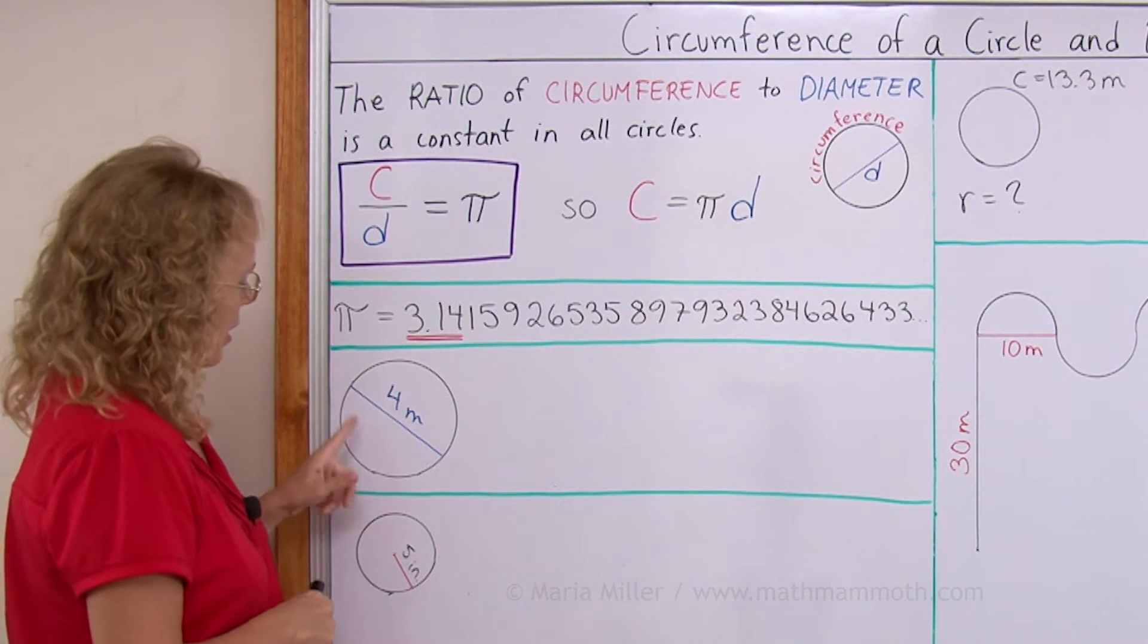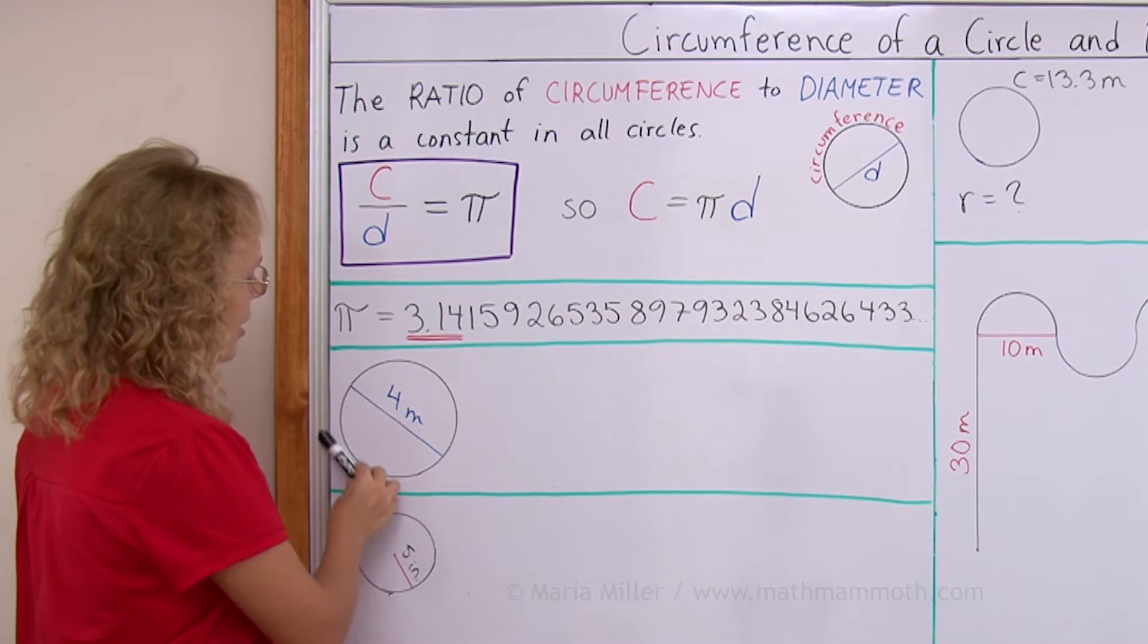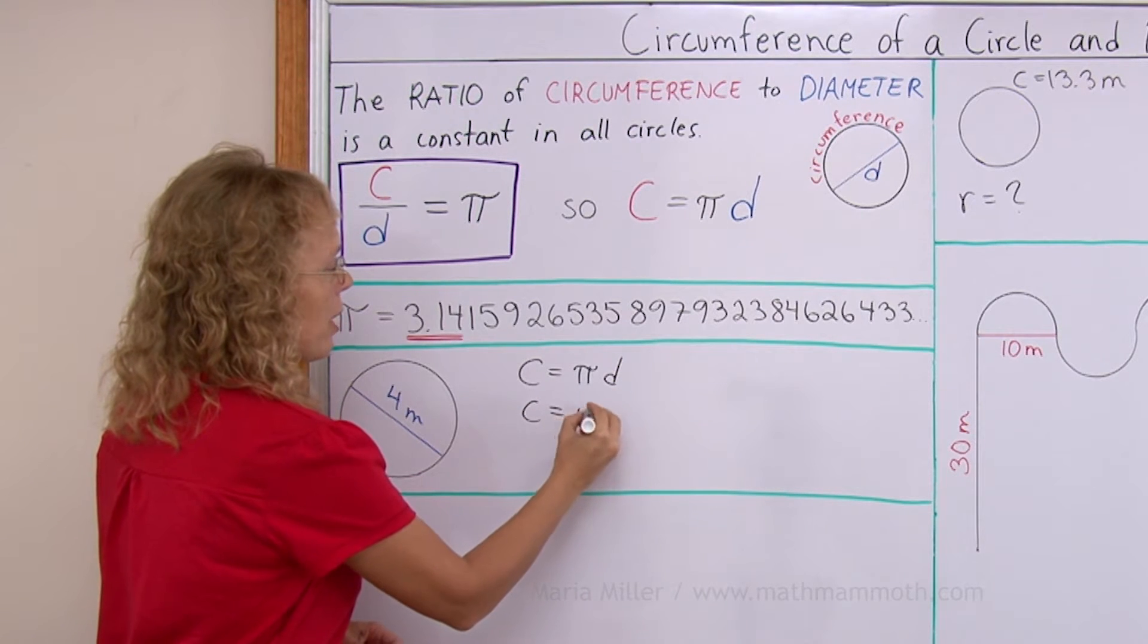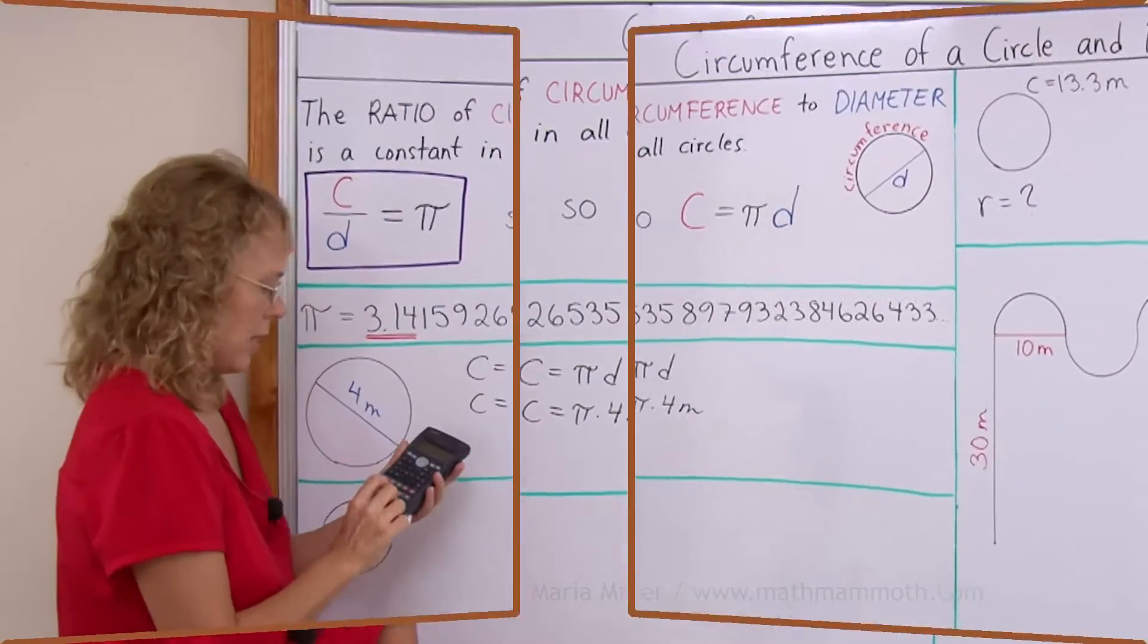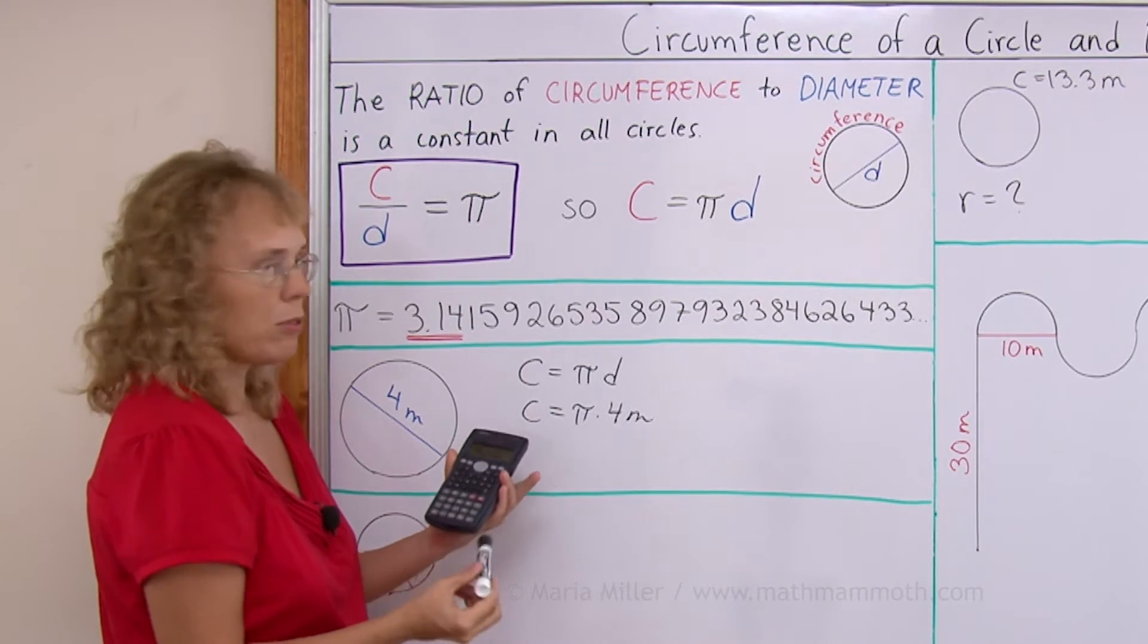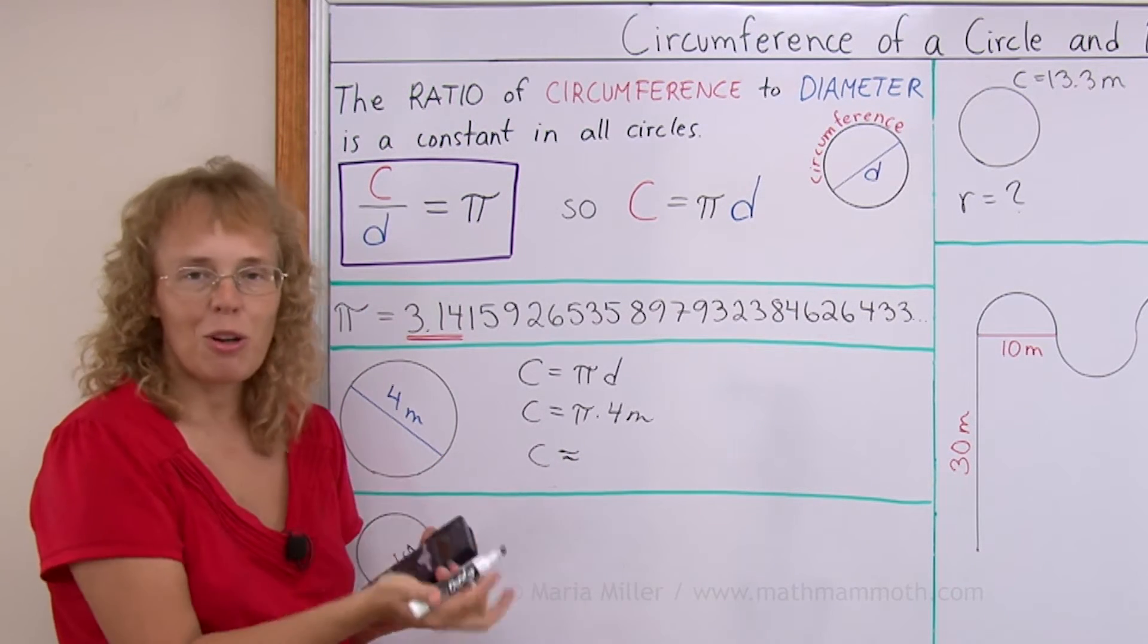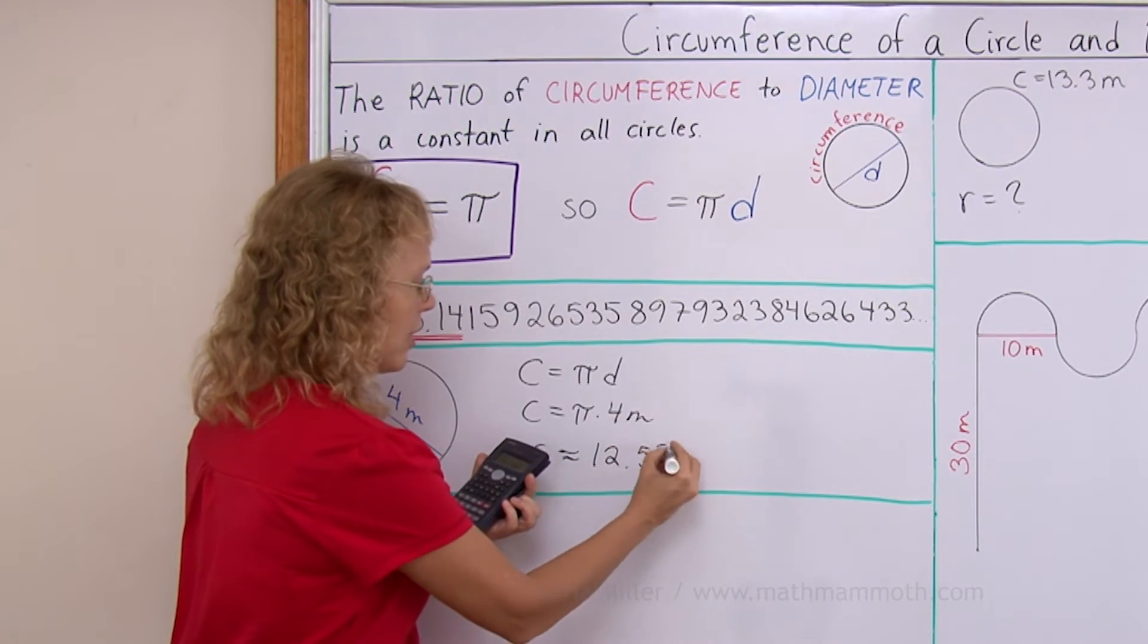For example, here's a circle with a diameter of four meters. So we can now calculate its circumference, C. C equals pi times D. C equals therefore pi times four meters. And now you take your calculator and calculate four times pi, or four times 3.14. And then we will get that the circumference is, well, approximately, of course it's going to always give you this long decimal number. Approximately 12.57 meters.